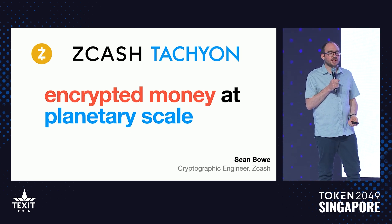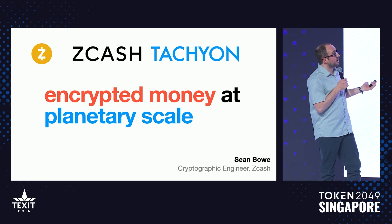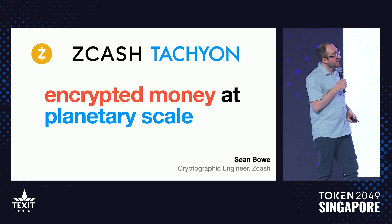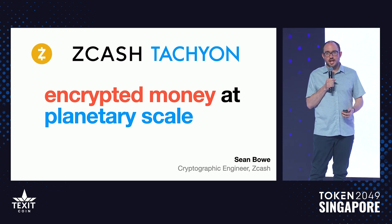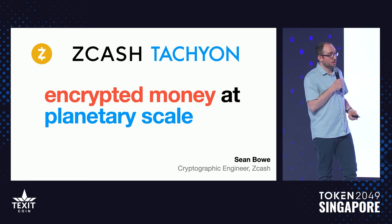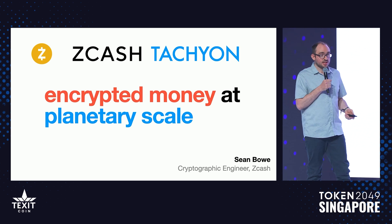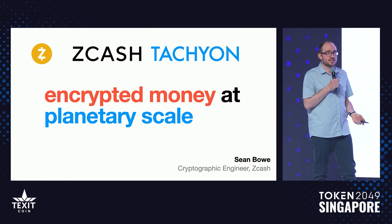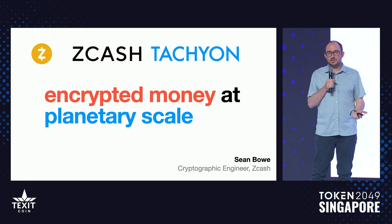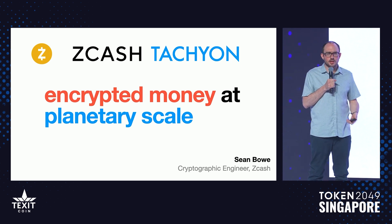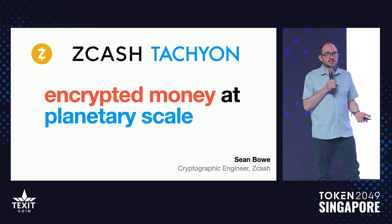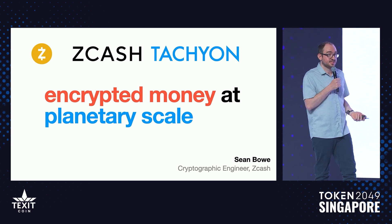We need to use it for privacy because we don't know how to build encrypted money without zero-knowledge proofs. Tachyon, the project I'm working on, is an effort over the next year or so to integrate the next evolution of cryptography in Zcash to scale the protocol. We need to eliminate all of the remaining cryptographic and scaling bottlenecks through the use of a marriage of ZK-SNARKs, recursive proofs, and other cryptography we've been working on for years — in order to make it so that everyone on the planet can use encrypted money in Zcash.